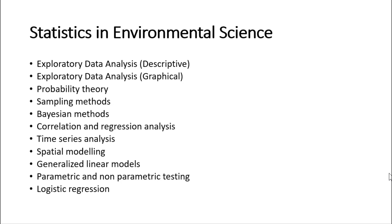There are various tools and techniques available in statistics which are applied in environmental science nowadays. Some of the key topics include: exploratory data analysis — both numerical and graphical — probability theory, sampling methods, Bayesian methods, correlation and regression analysis, time series analysis, spatial modeling, generalized linear models, and parametric and non-parametric testing procedures.